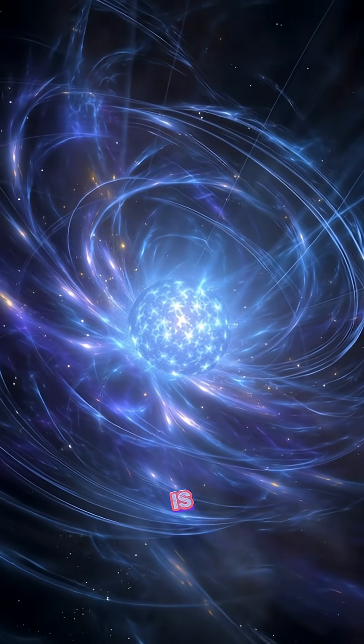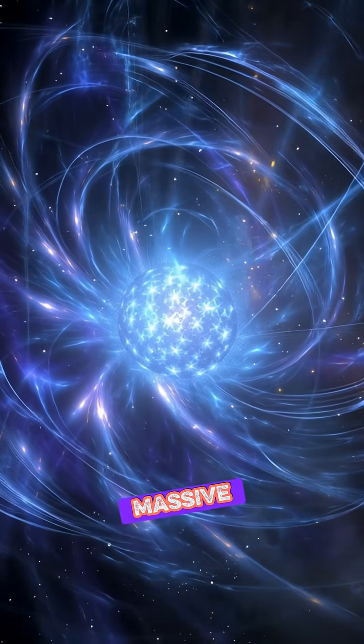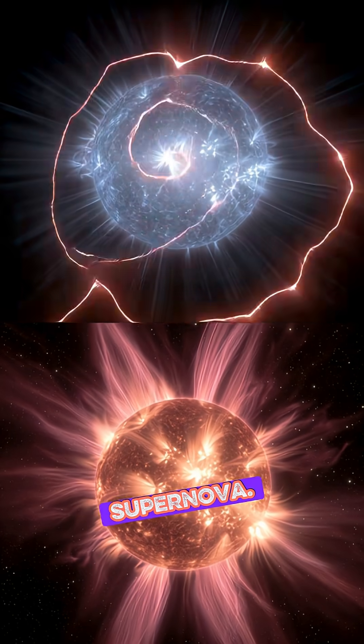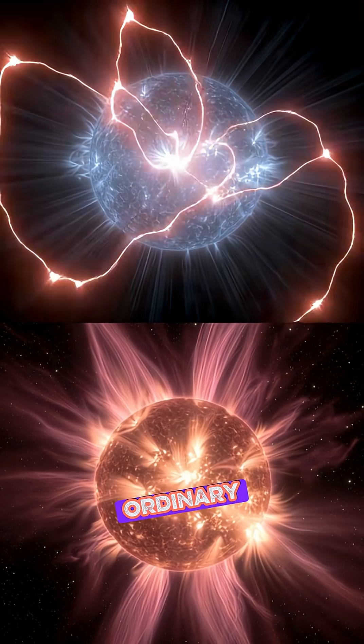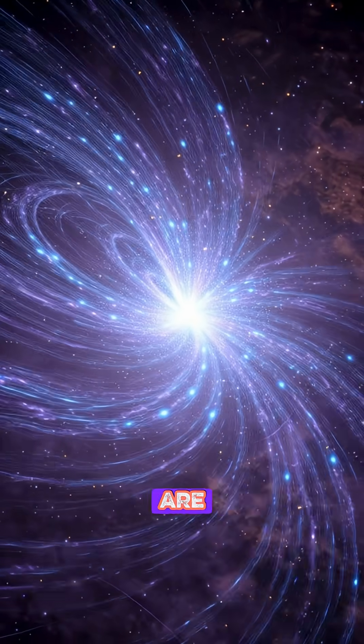A magnetar is a dead star, the collapsed core of a massive sun that exploded in a supernova. But unlike ordinary neutron stars, magnetars are extreme.